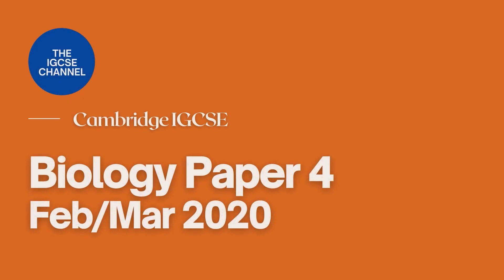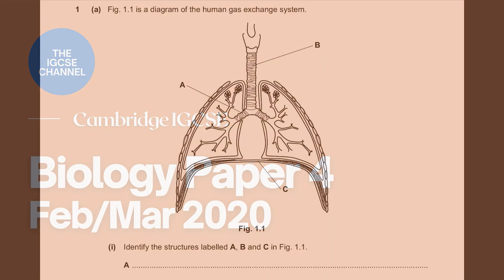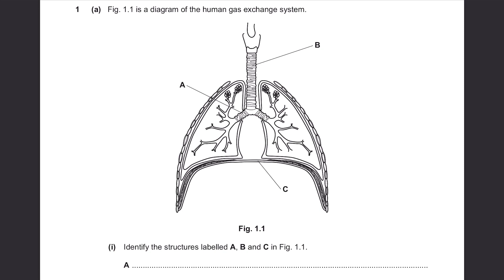Hey guys, this is Cambridge IGCSE Biology February March 2020, Paper 4. Question 1, Part A.